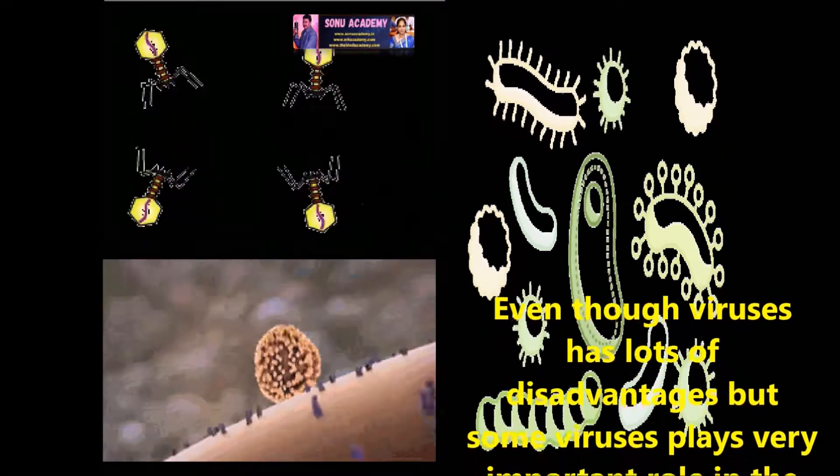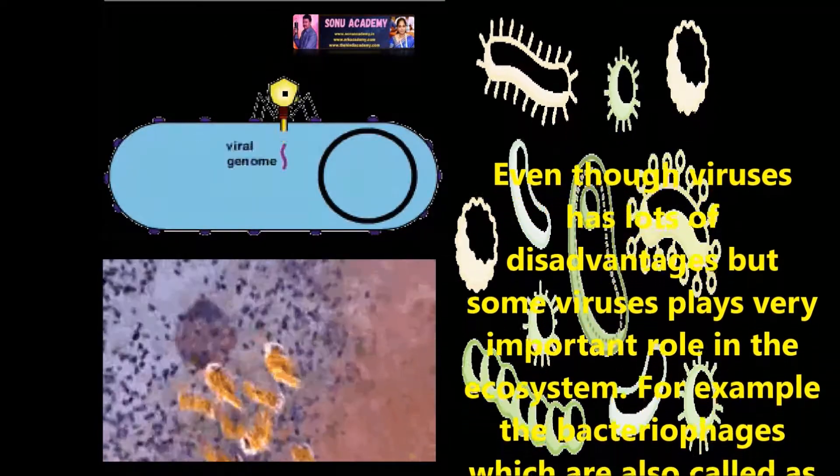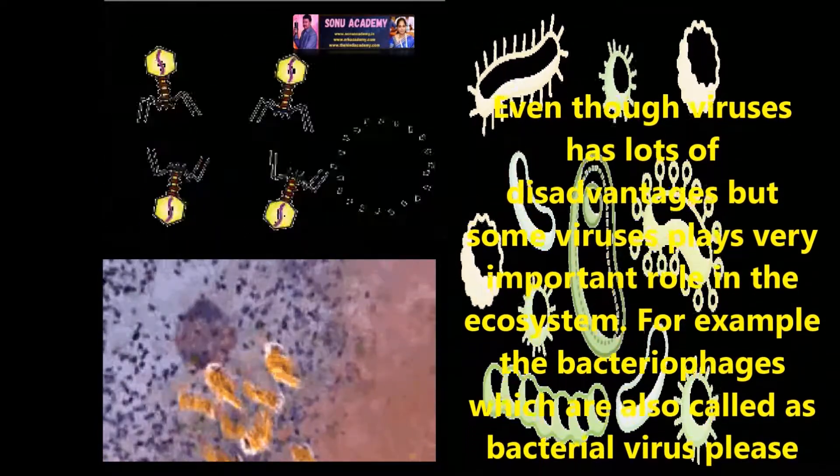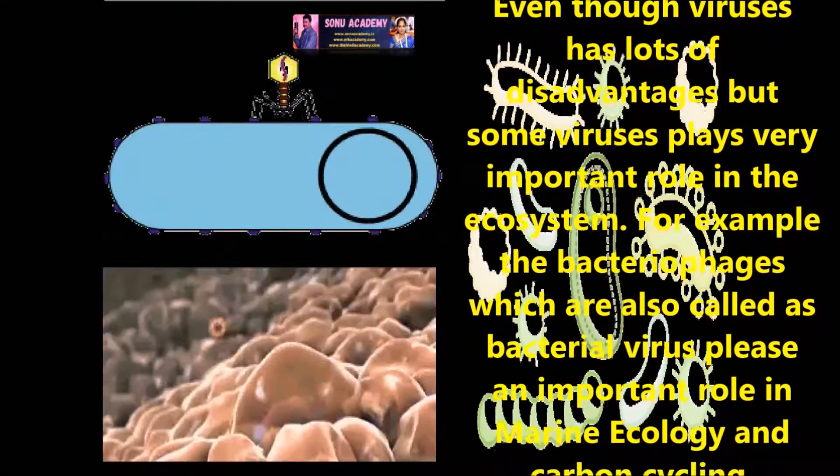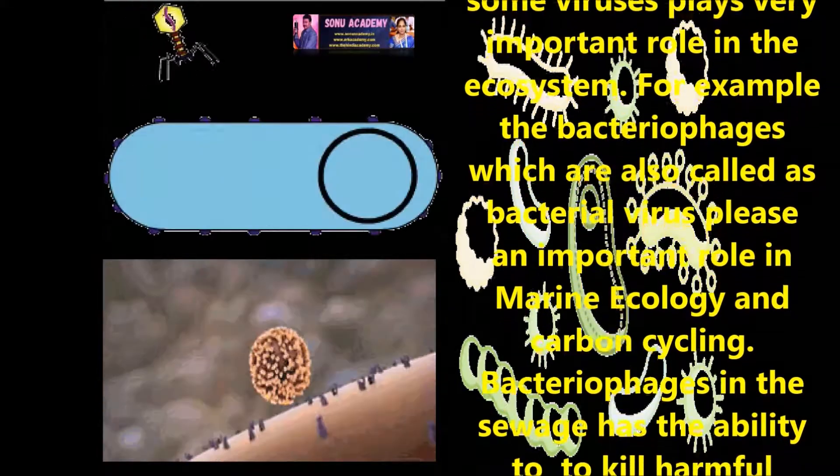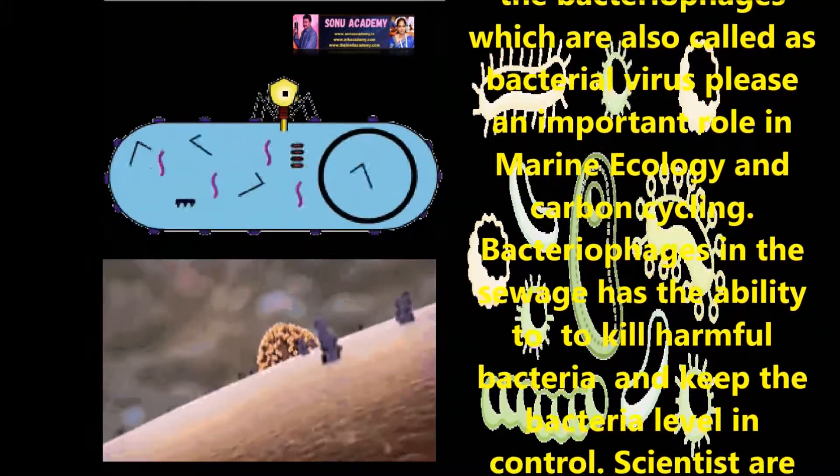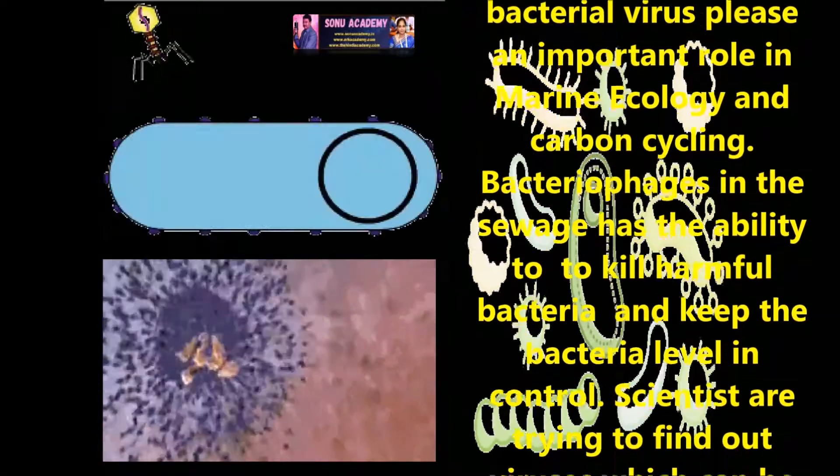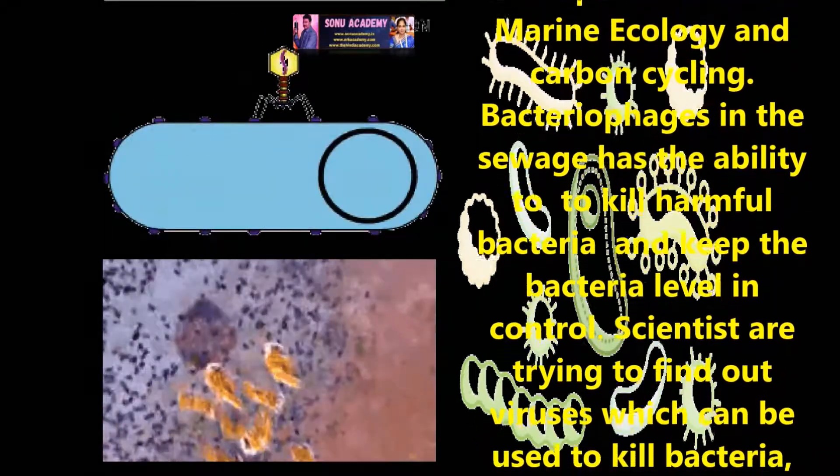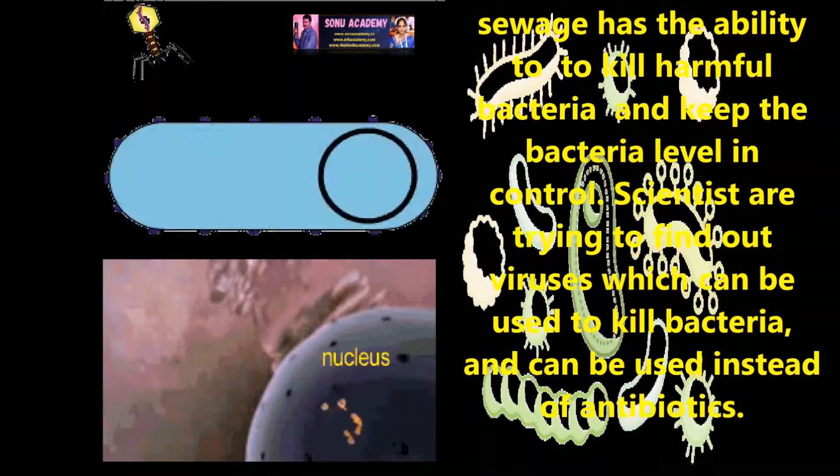Children, now let us discuss the advantages of virus. Even though viruses have lots of disadvantages, some viruses play a vital important role in ecosystem. For example, the bacterial phage, which are also called bacterial viruses, play an important role in marine ecology and carbon cycle.